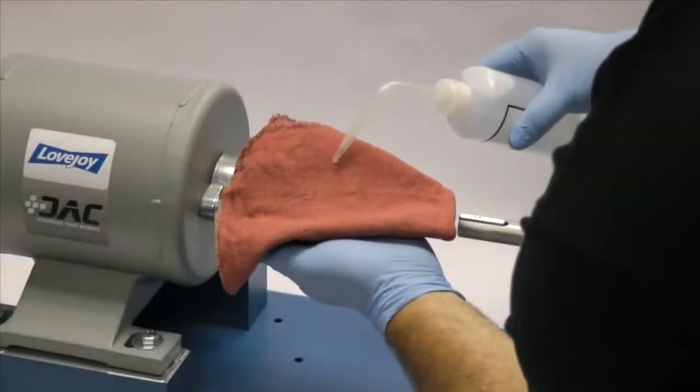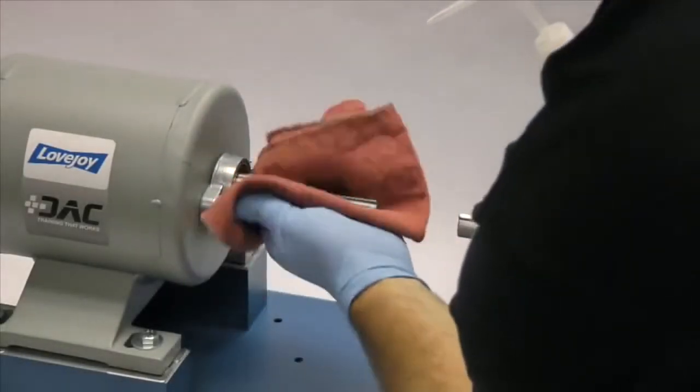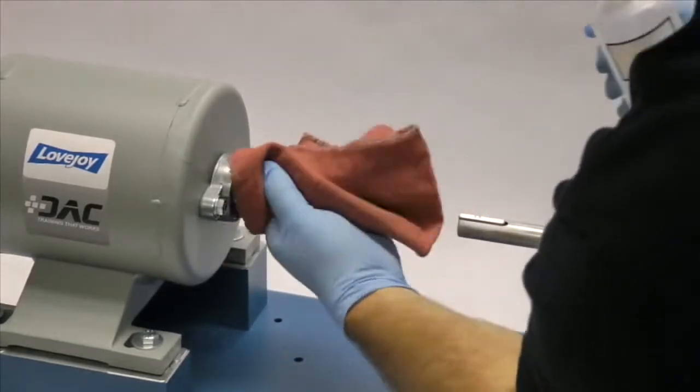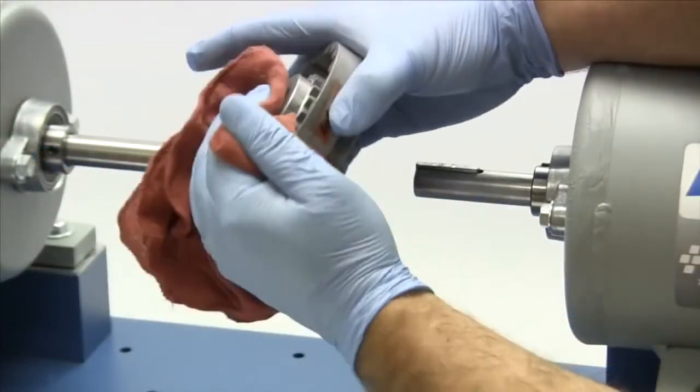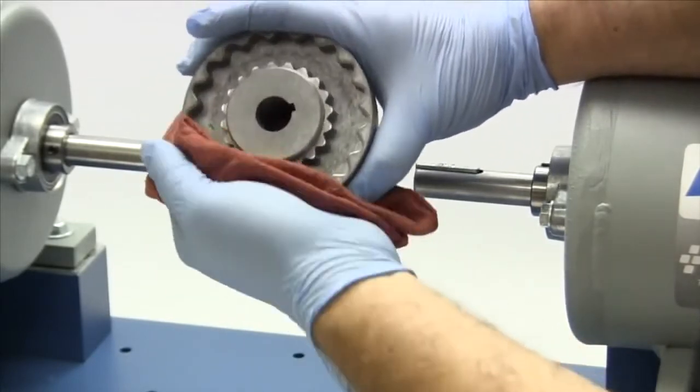Finally, using our cloth and cleaning solvent, we need to ensure the surface of the shaft and the keyway are clean and free of dirt. The flanges should also be cleaned to remove any coatings used to protect them during shipping.